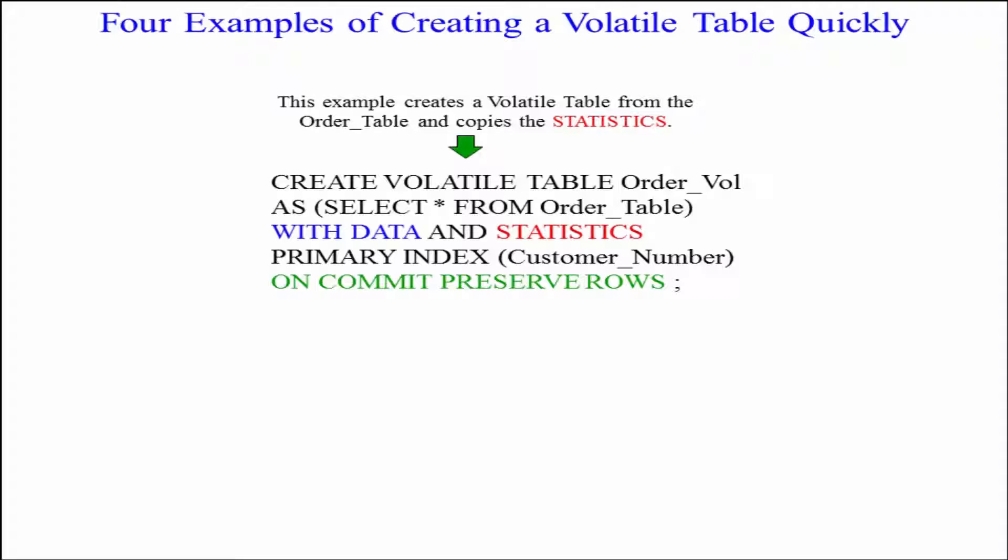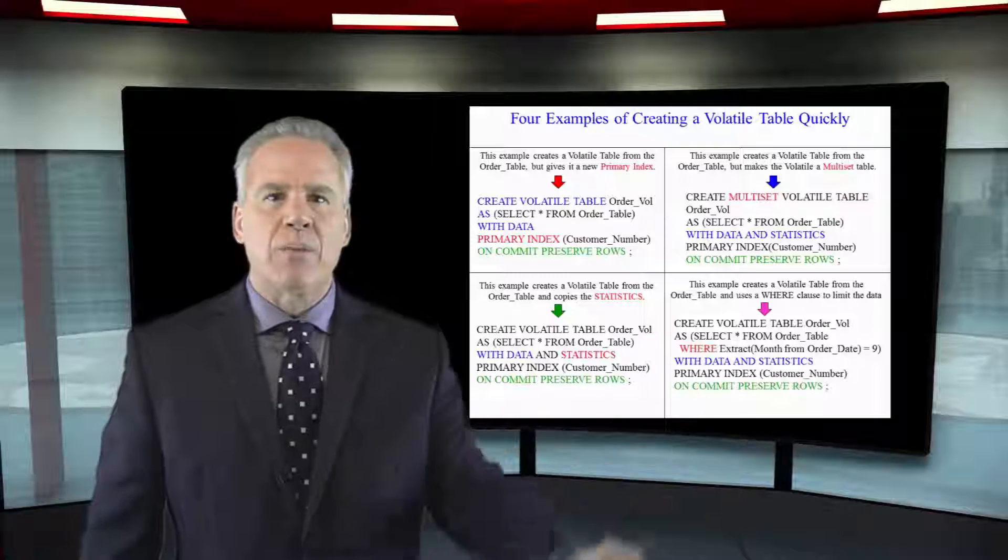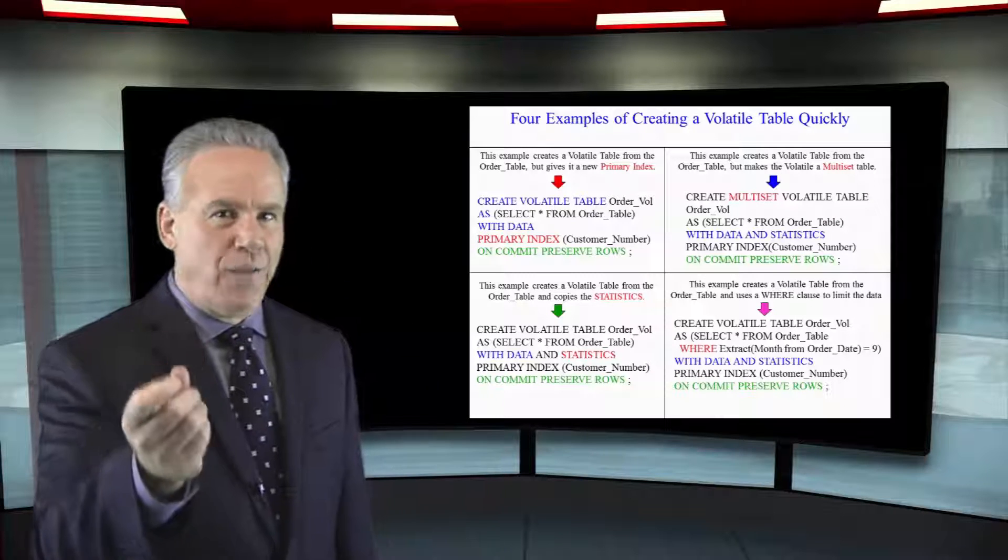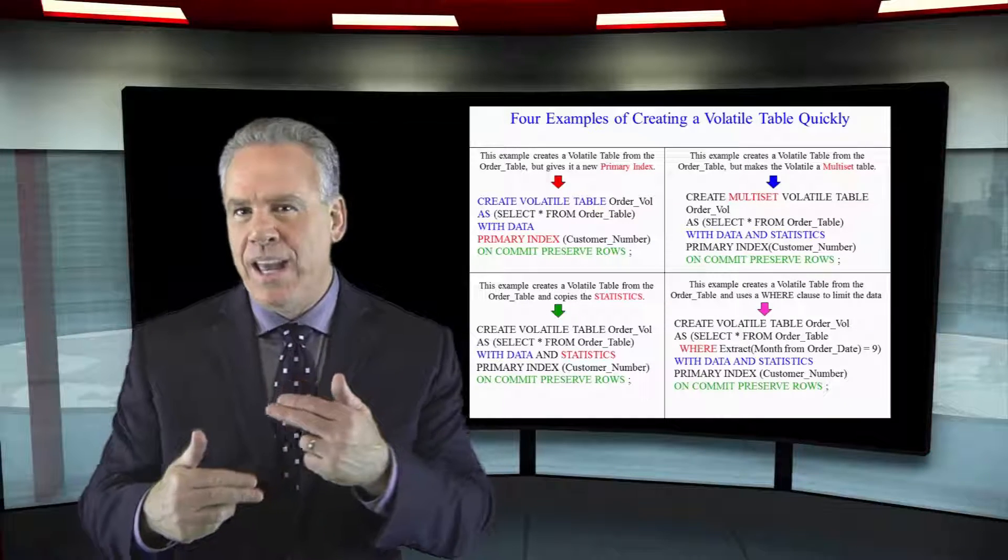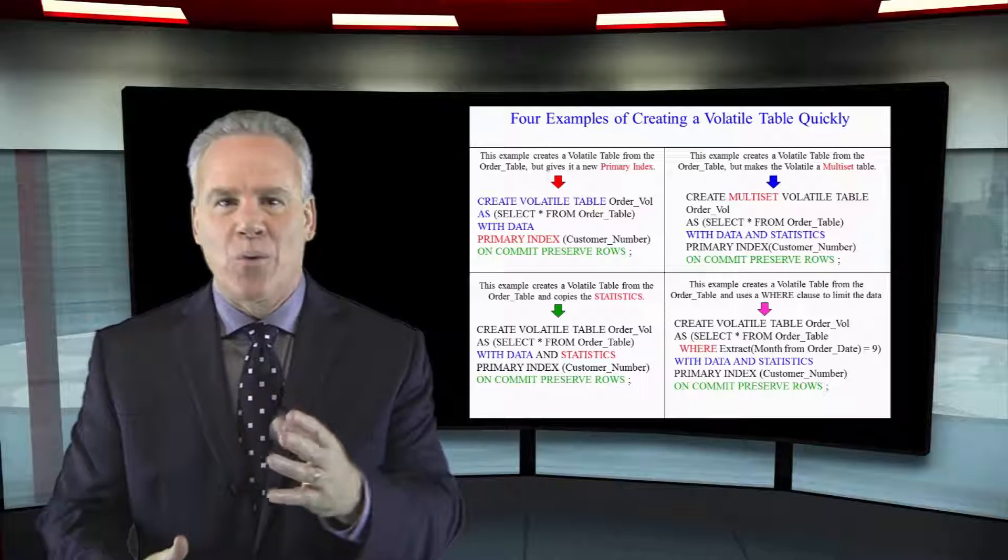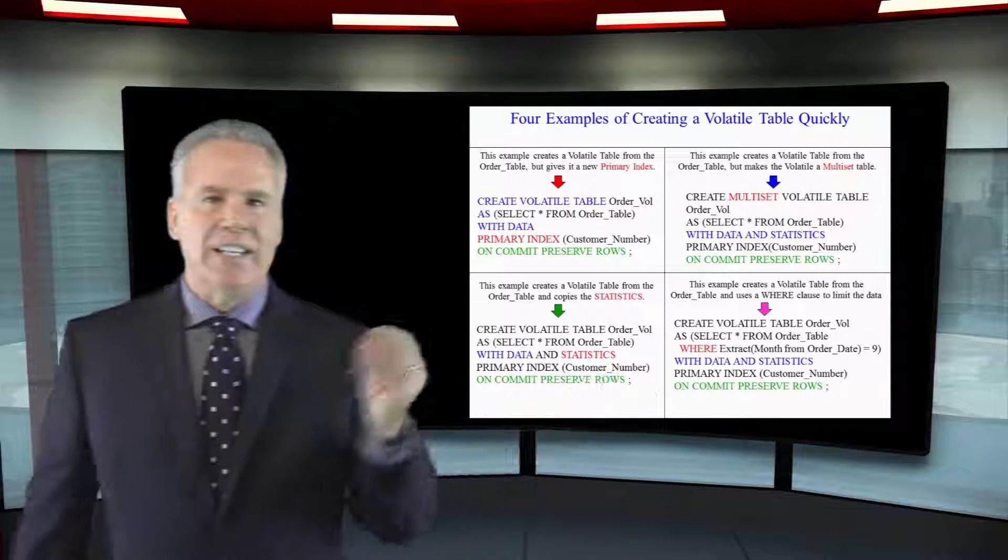Let's look at the next example. I'm going to create the volatile table, give it a name, as select everything from the order table with data and statistics again and that's a great way to get the data with those statistics. But here I didn't say if it was a set or multi-set. It's going to default to whatever the DBA set the system at originally.